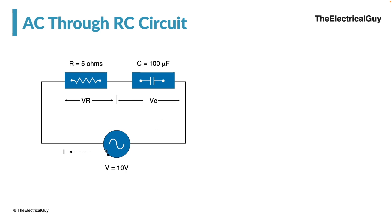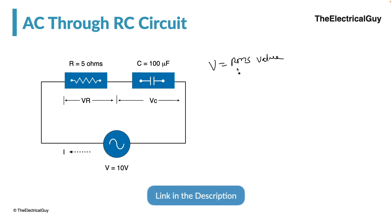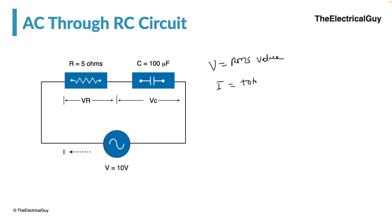Focus on the circuit shown. We have a voltage source giving us a 10 volt RMS value. I is the total circuit current flowing in the circuit. When current flows through the circuit there will be a voltage drop across the resistance, which we are labeling as VR.